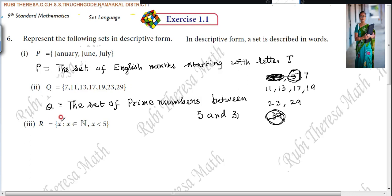R equals X such that X belongs to natural number. X is an element of natural number and X is less than 5. How do you have to start? Same thing. The set of what type of number? The set of natural numbers. But what is the condition? Less than 5. The set of natural numbers less than 5. You got it described with the help of words. Isn't it?